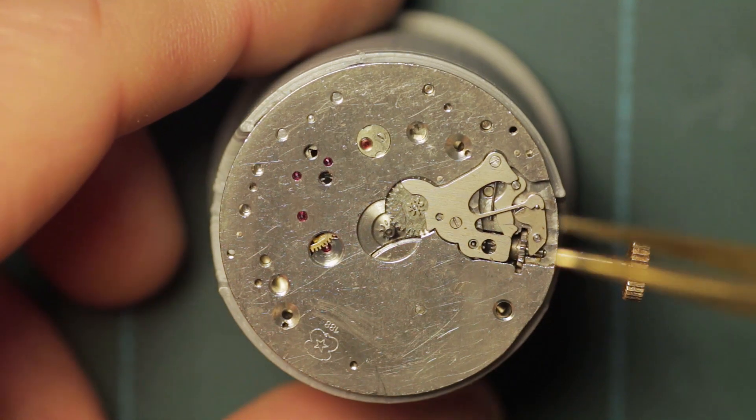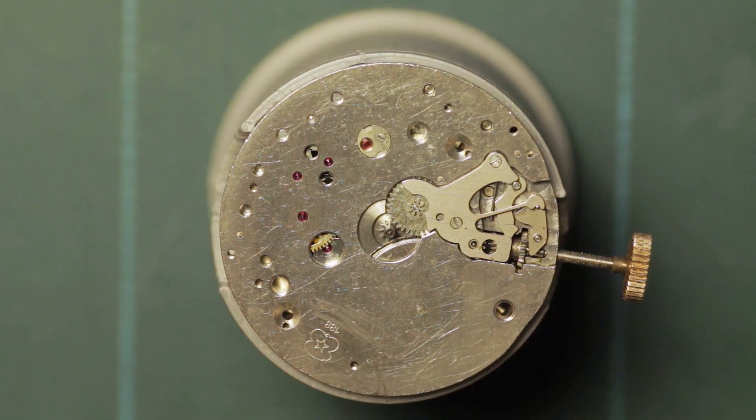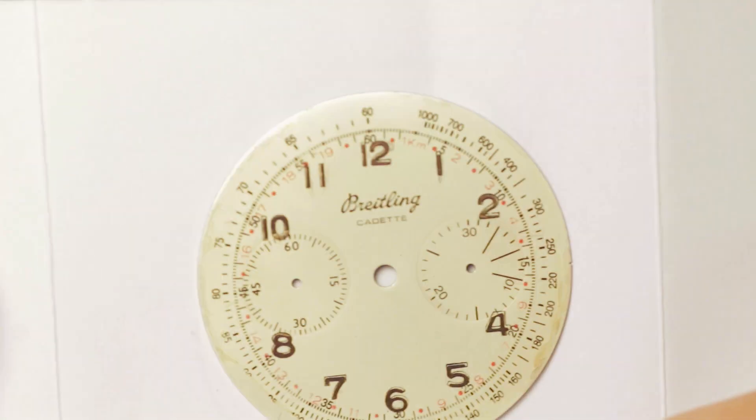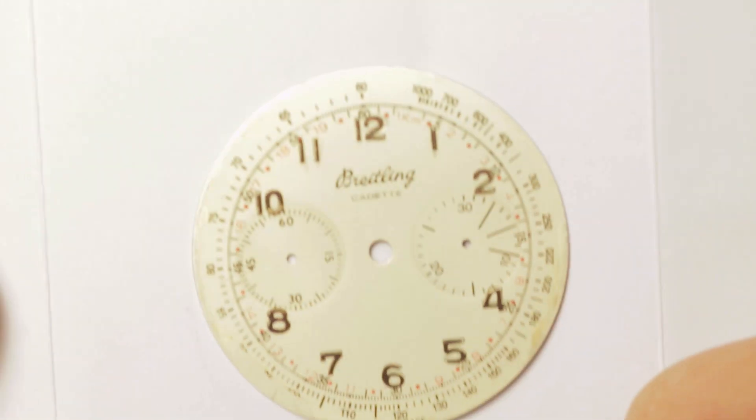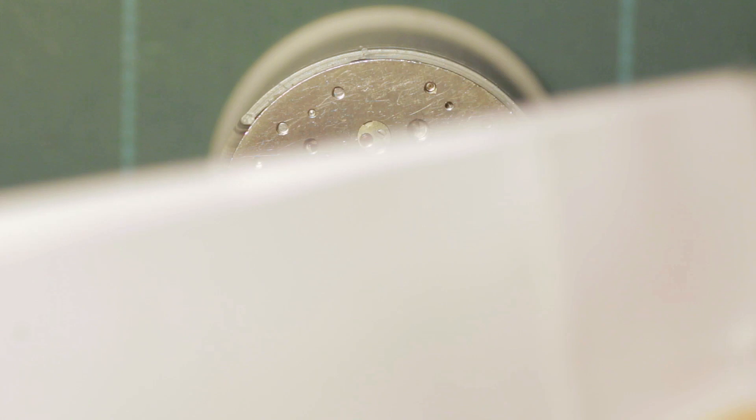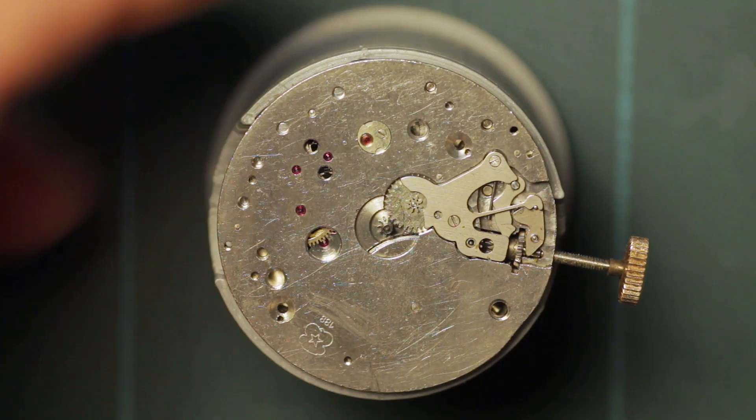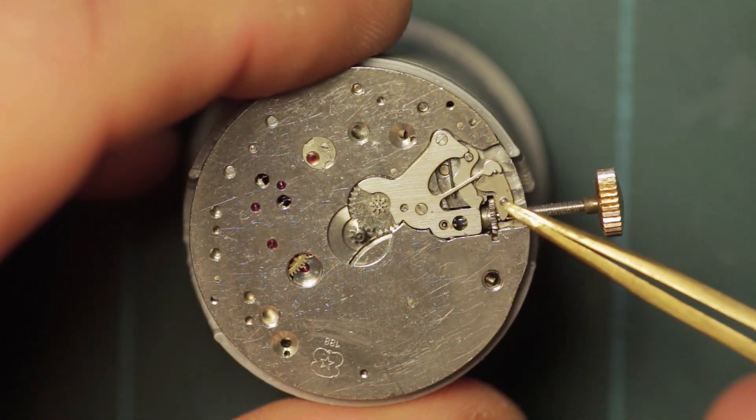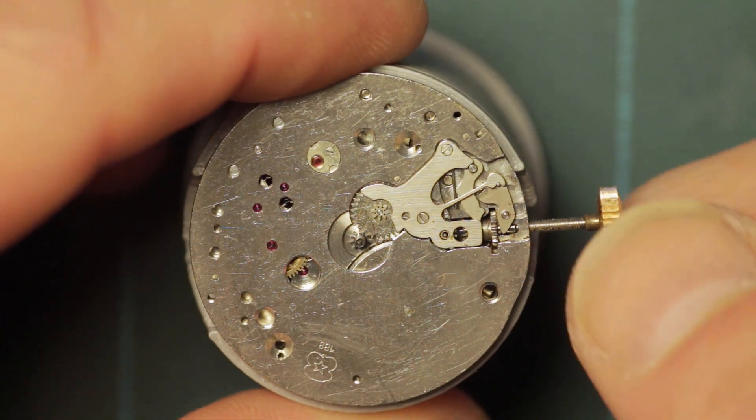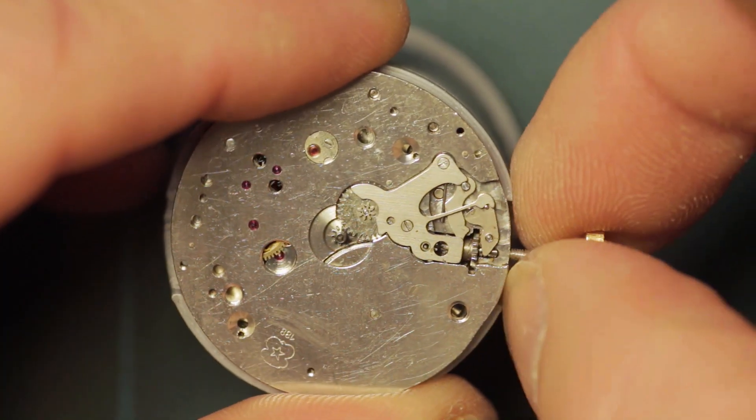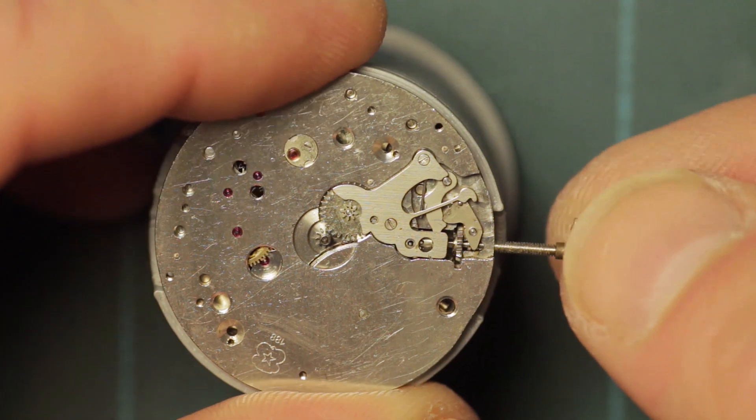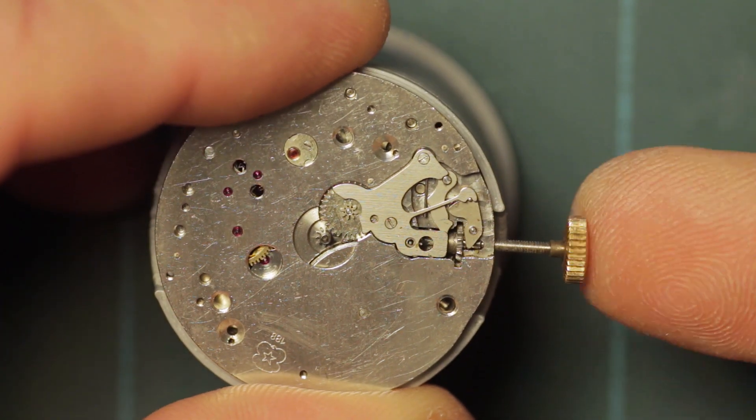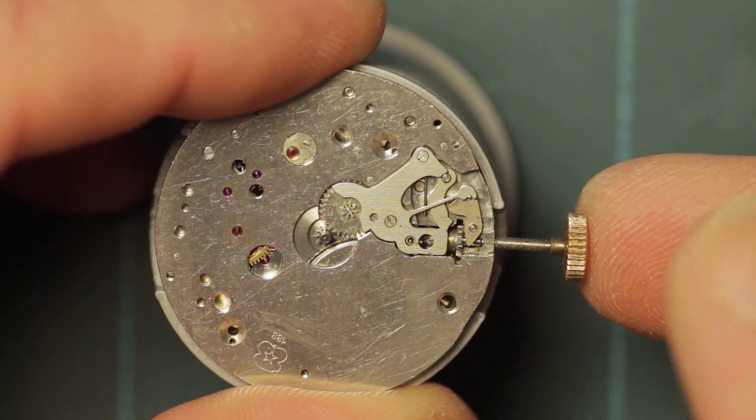Down here on the bench we've got the Breitling that you saw previously, this lovely little Breitling Cadet with the Venus 188 chronograph movement. One of the problems when it came to me was that the stem would not seat. A replacement stem had been sourced - the old one I believe was broken - but it wouldn't seat in the movement.